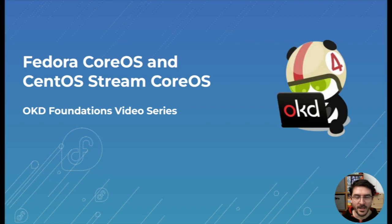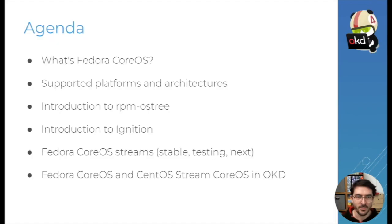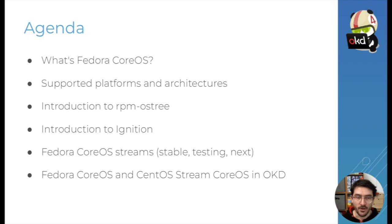Hi everyone, I'm Timothée Ravier and in this video we'll be talking about Fedora CoreOS and CentOS Stream CoreOS. We have a lot on the agenda today: we're going to talk about Fedora CoreOS, where it is supported, where it is available, a short introduction to RPM-OSTree, then we'll talk about Ignition, how Fedora CoreOS is distributed via streams, and finally how it relates to CentOS Stream CoreOS and how all of this fits into OKD.